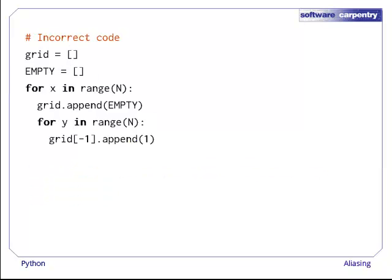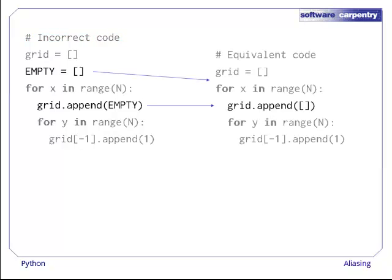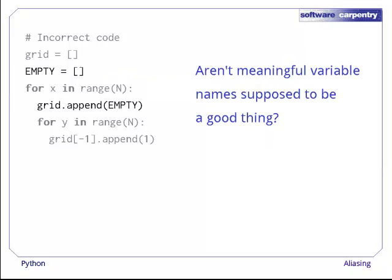Here's another version that looks almost the same, but which contains a bug due to aliasing. If we highlight the changes, you can see that the buggy code is just giving the empty list a name. How can this be a bug? Aren't meaningful variable names supposed to be a good thing?